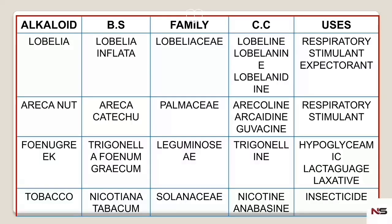For fenugreek: the biological source is Trigonella foenum-graecum, which belongs to the family Leguminosae. The main chemical constituent is trigonelline. Fenugreek is used as a hypoglycemic agent — useful for diabetic patients — as well as a lactagogue and laxative.